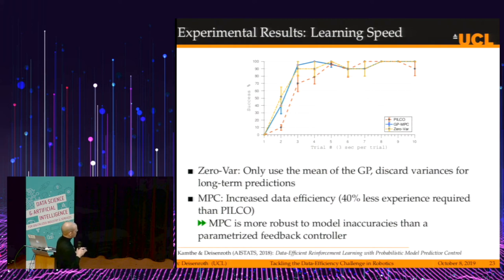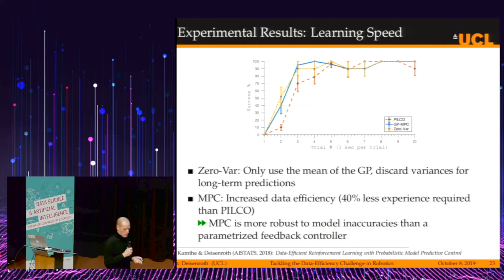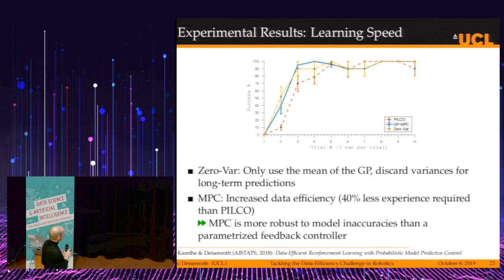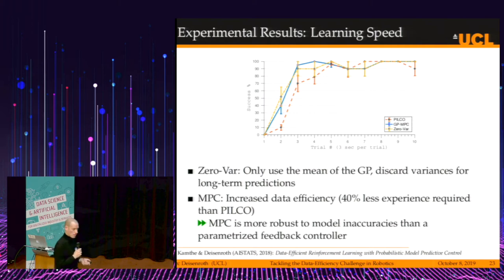The MPC with Gaussian process, taking uncertainty into account, learns at roughly the same speed as the zero-variance method. But both are significantly faster than the red method — they shave off about 40% of experimentation time to hit the 90% success rate. On a more complicated double pendulum system, the zero-variance method completely fails, while the MPC method with variance predictions again takes about 40% less experimentation time. This is a relatively consistent pattern.